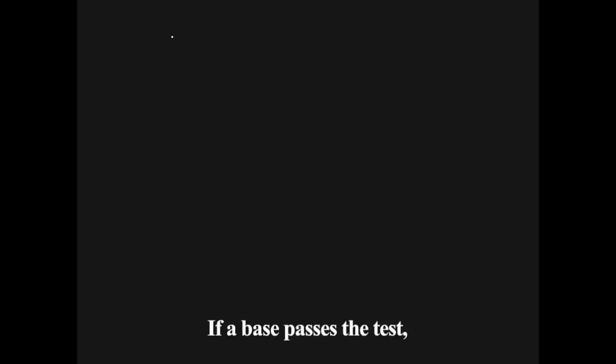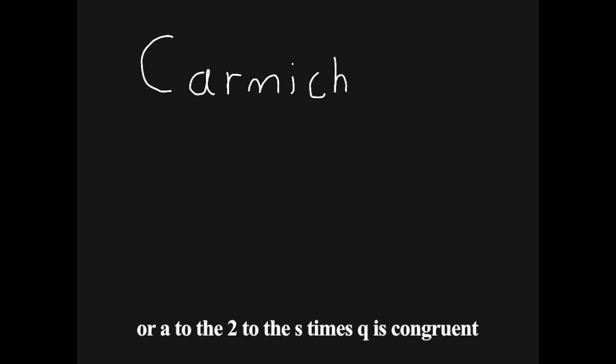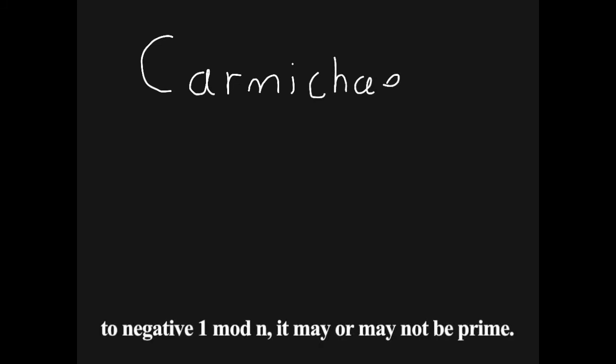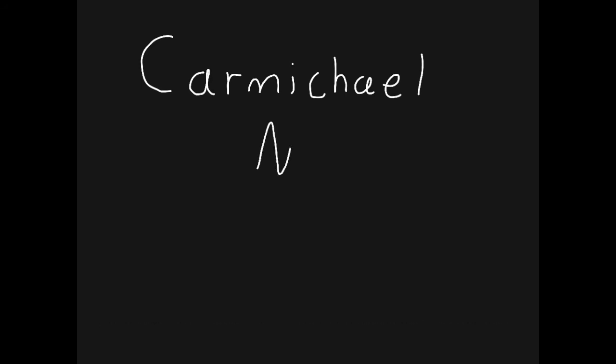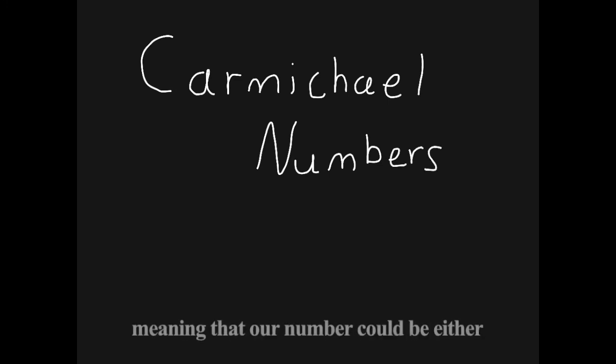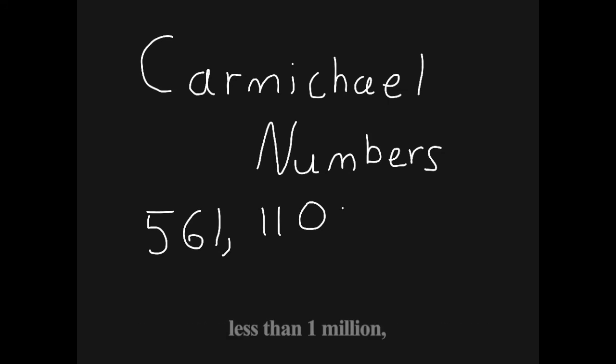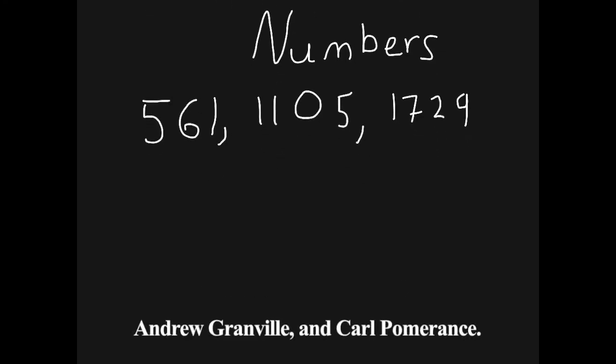If a base passes the test, that is either a to the q is equal to 1 mod n or a to the 2 to the s times q is congruent to negative 1 mod n, it may or may not be prime. This is because not only do all primes satisfy Fermat's little theorem, but so do Carmichael numbers, meaning that our number could be either prime or a Carmichael number. While there are only 43 Carmichael numbers less than 1 million, there are an infinite amount of them, as proved by W. R. Alford, Andrew Granville, and Carl Pomerantz.